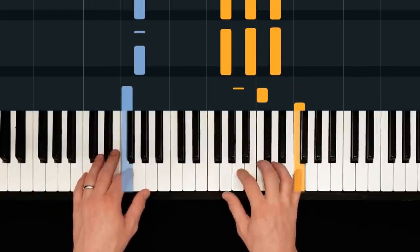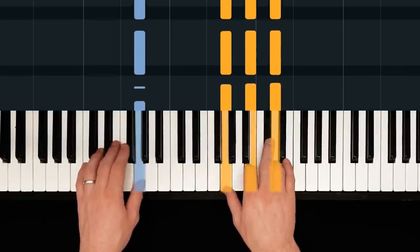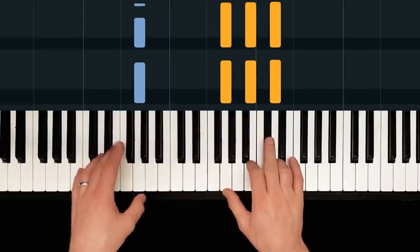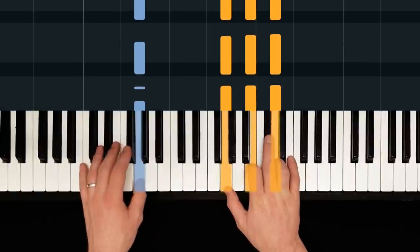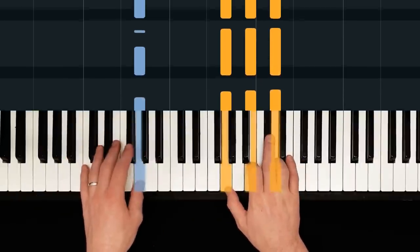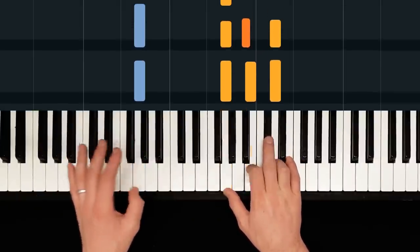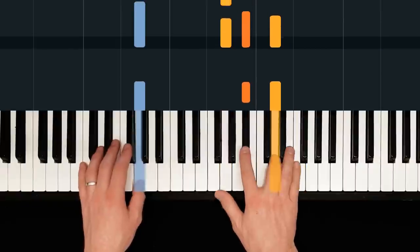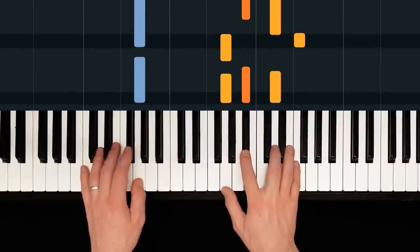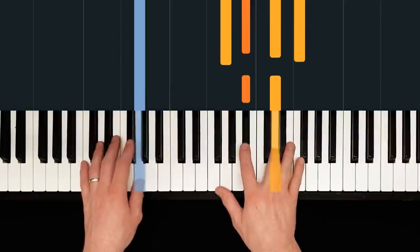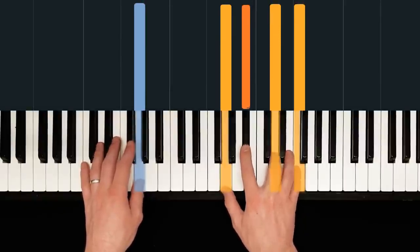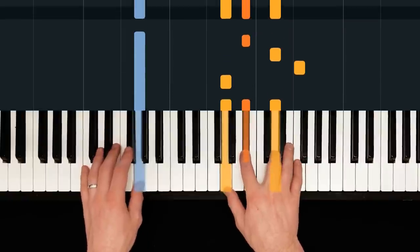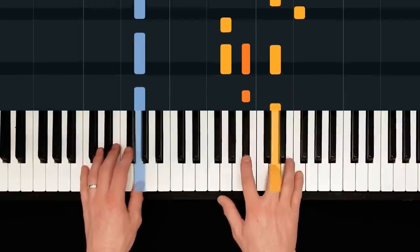Then we go to G again. A bit simpler this time. Just block chords with a slightly offbeat rhythm in the bass. Then to G minor. And from two and onwards, a G minor seven root position arpeggio of sorts.